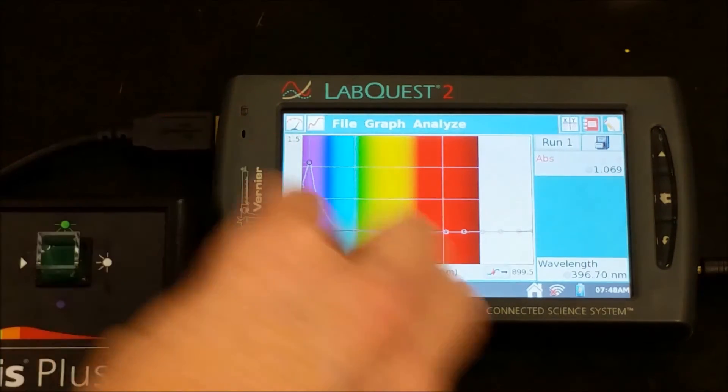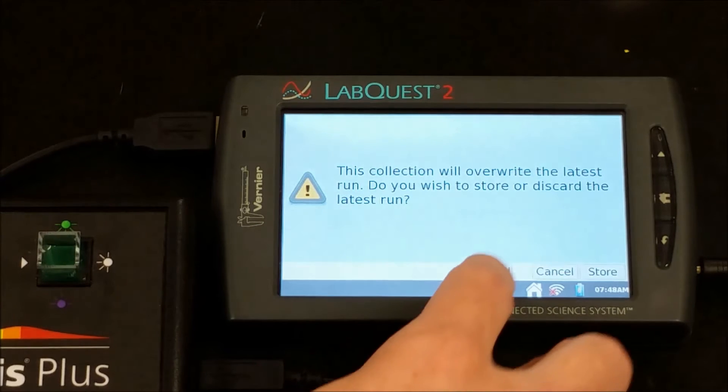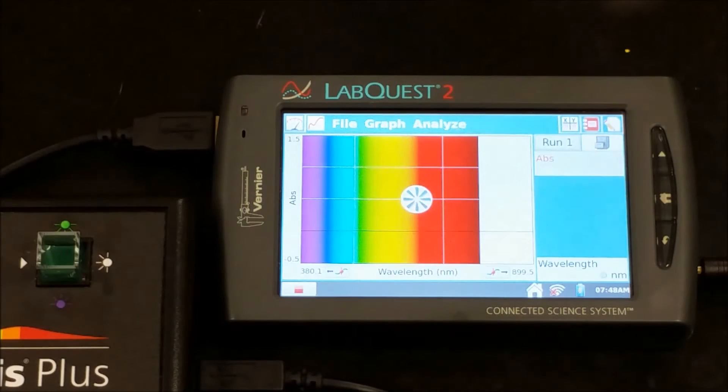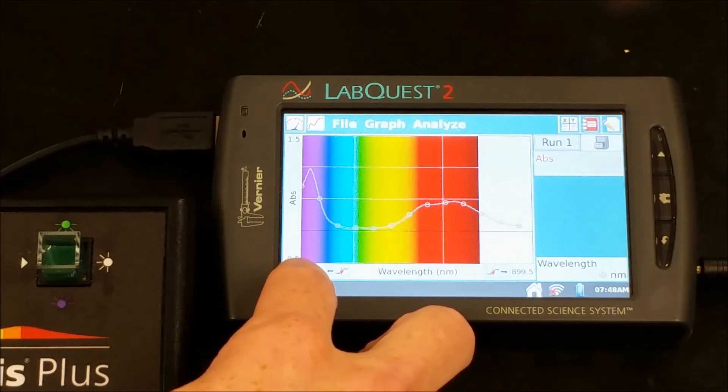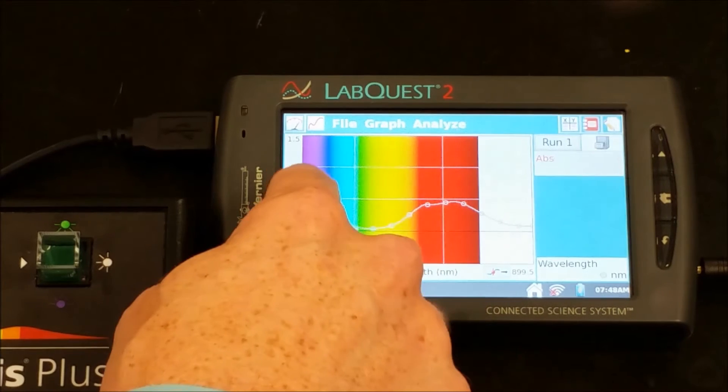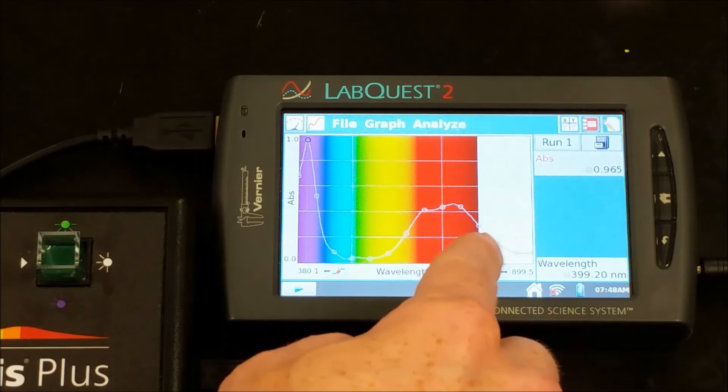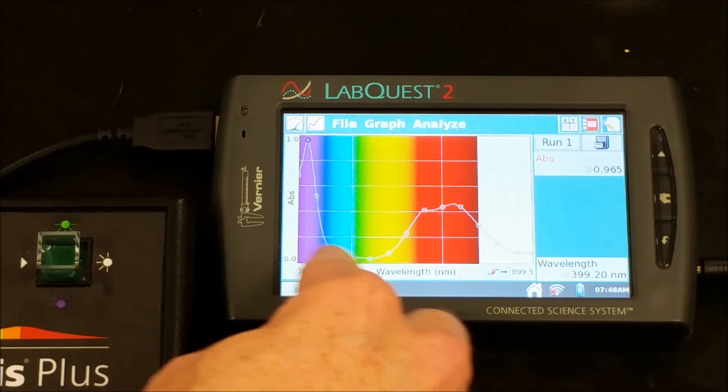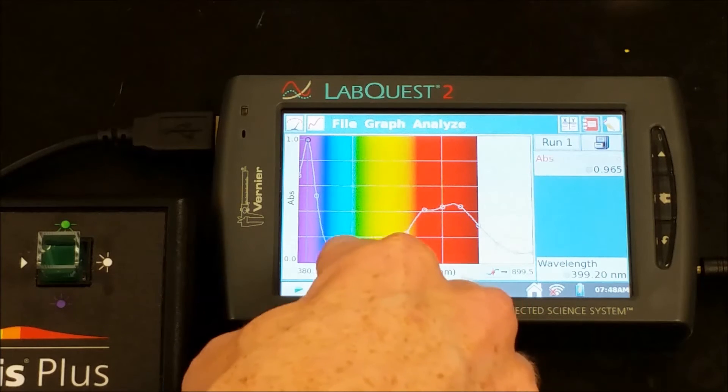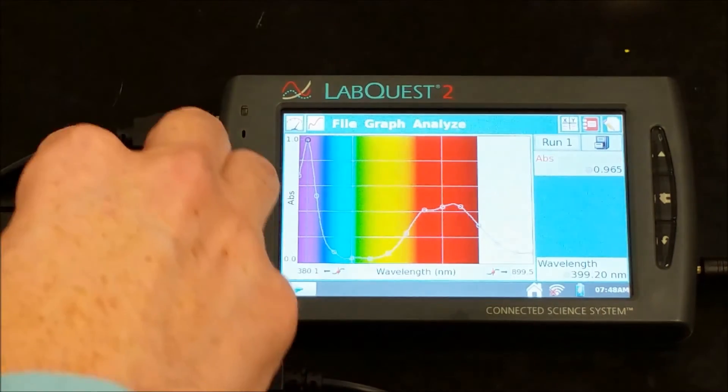We'll do green next. For green, we see some purple being absorbed, and we see some red into the orange region also being absorbed. We're seeing green transmitted, maybe a little blue, a little yellow, and then the other colors on the ends are being absorbed.